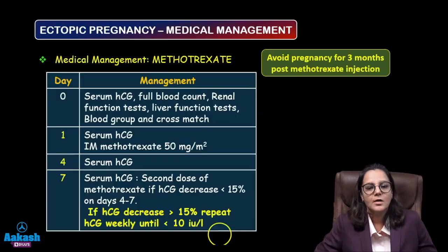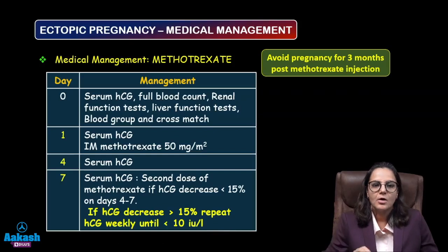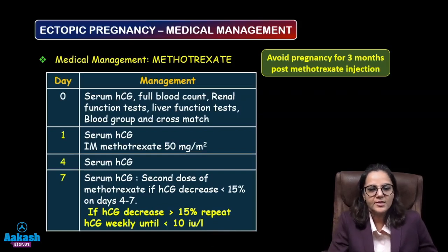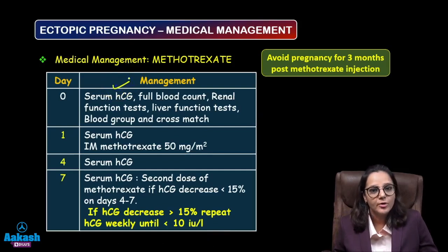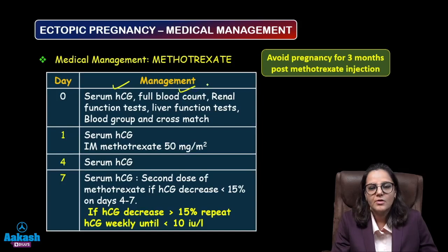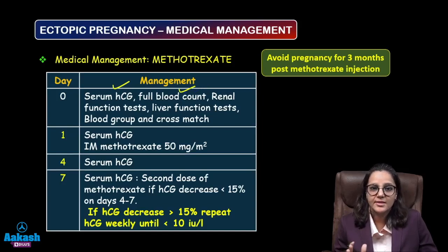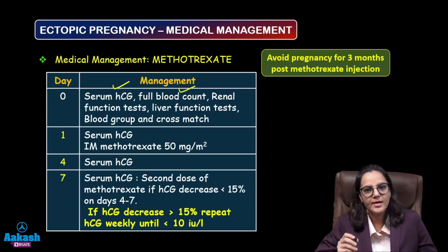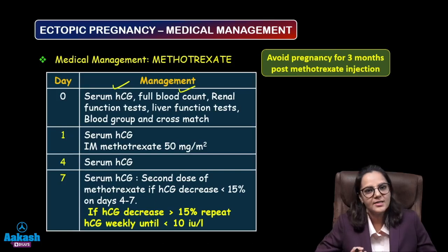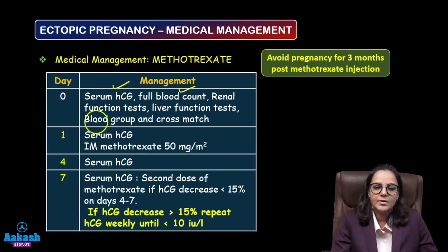A few important points about methotrexate: before giving it, obtain a serum beta-hCG level, since that is the monitoring baseline. Also do a CBC, renal function test, and liver function test because methotrexate affects the liver and kidneys. Perform blood grouping and Rh typing — if the patient is Rh negative or ICT negative, give anti-D.